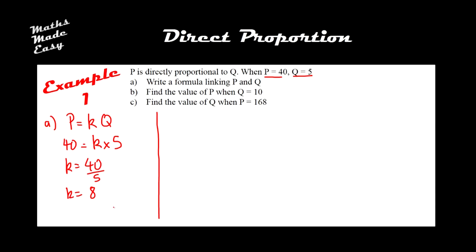Now that we've found K equals 8 using algebra, we can write the answer to our question: P equals 8Q. We have written a formula showing that P and Q are directly linked, with 8 as the constant of proportionality.